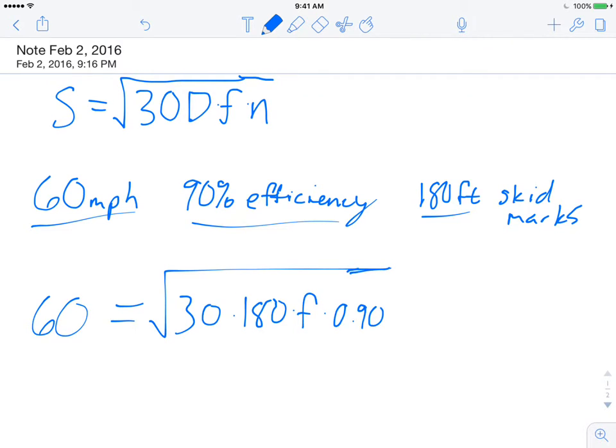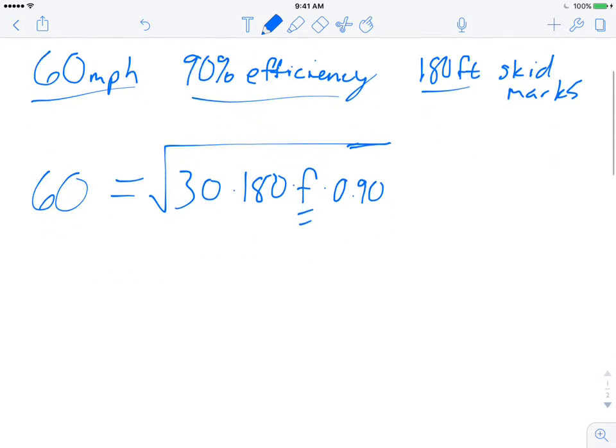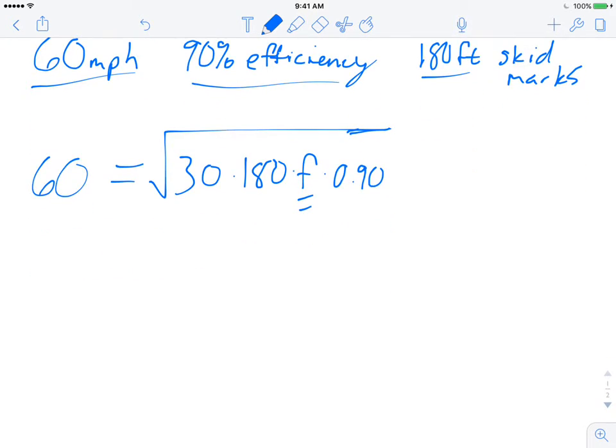So essentially, we need to solve for F. We've got to get F by itself. So in order to do that, what you'll do is first you're going to square both sides to get rid of the square root. So on this side, when I take 60 and I square it, I'm going to get 3,600.